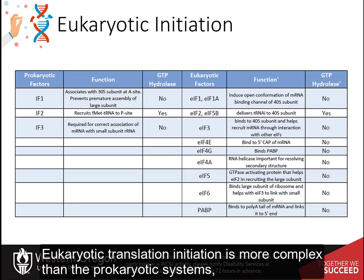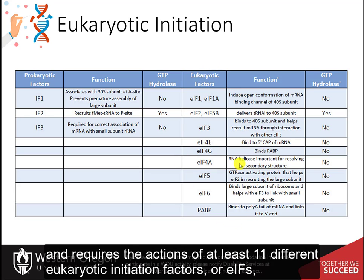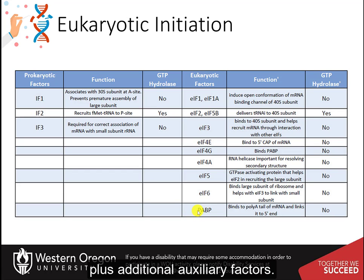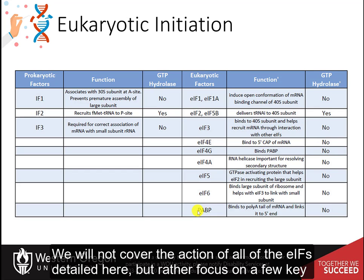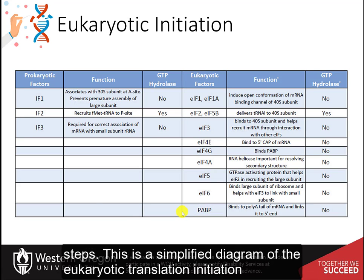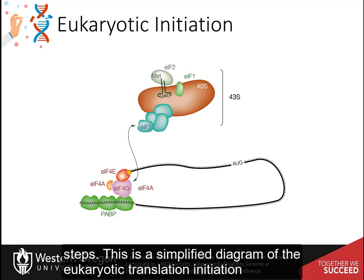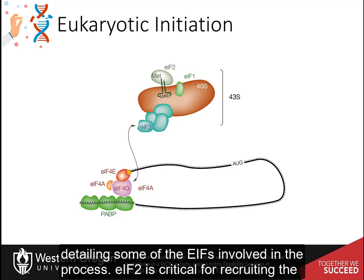Eukaryotic translation initiation is more complex than the prokaryotic systems and requires the actions of at least 11 different eukaryotic initiation factors, or EIFs, plus additional auxiliary factors. We will not cover the action of all of these EIFs in detail here, but rather focus on a few key steps. This is a simplified diagram of eukaryotic translation initiation detailing some of the EIFs involved in the process.